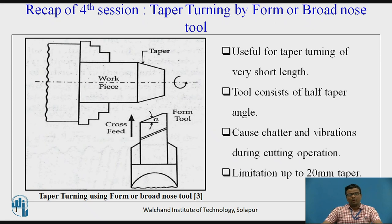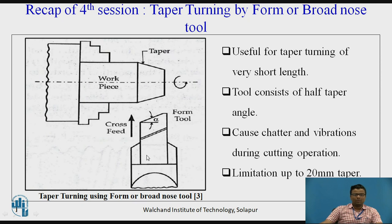The second method is taper turning by the form or broad-nose tool. The form tool already has the taper angle; the workpiece is fixed in the three-jaw chuck. With cross-feed and relative motion between the workpiece and the tool, you get a very short taper — up to 20 mm length only. So these two operations are used for a very small amount of taper turning.